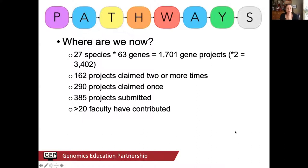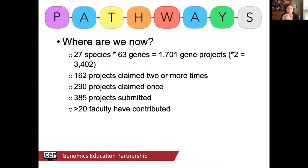We're looking across 27 species beyond Drosophila melanogaster, focusing on 63 genes — essentially all genes identified by FlyBase as being in the insulin signaling pathway, plus a few others including the insulin proteins themselves. That's about 1,700 unique projects, or roughly 3,400 total with two students per project. At present, 162 projects have been claimed two or more times, nearly 300 claimed once, and nearly 400 have been submitted and are being reconciled now. More than 20 faculty have been part of this project.